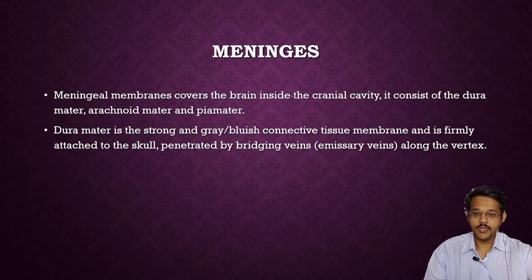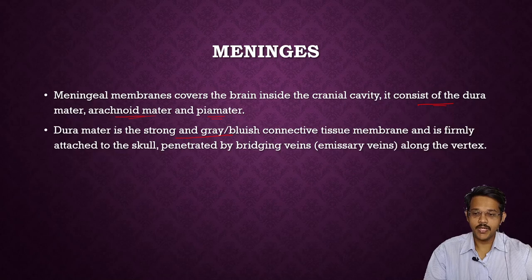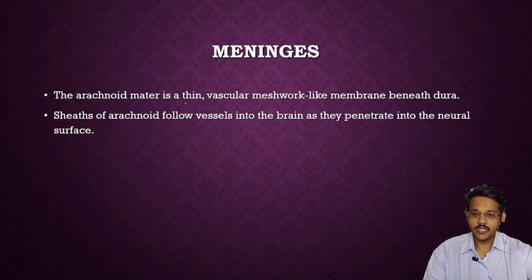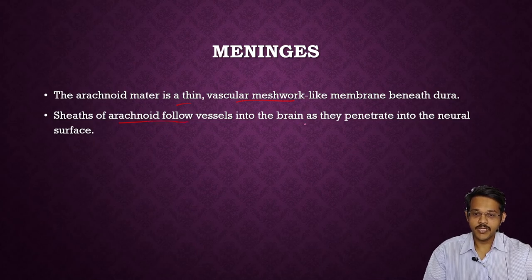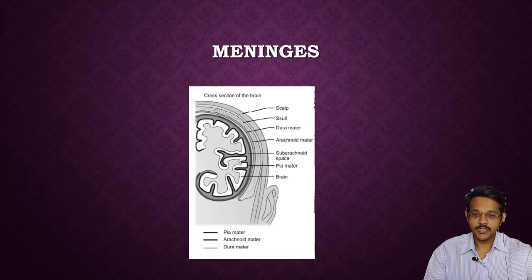Meningeal membranes cover the brain inside the cranial cavity. They consist mainly of dura mater, arachnoid mater, and pia mater. Dura mater is a strong gray-bluish connective tissue membrane and is firmly attached to the skull. It is drained by many bridging veins along the vertex. Arachnoid mater is a thin avascular mesh-like membrane beneath the dura mater; sheets of arachnoid follow the vessels into the brain.